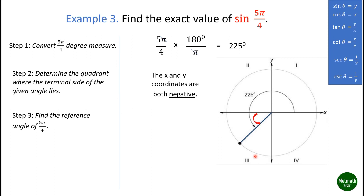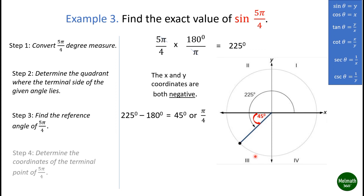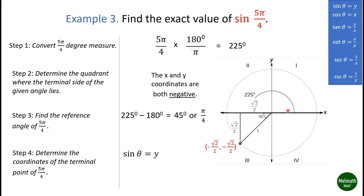Find the reference angle of 5π/4: 225° - 180° = 45°, or pi over four. Determine the coordinates of the terminal point of 5π/4. Recall that the point at π/4 equals (√2/2, √2/2). Since 5π/4 is in quadrant three, the point at 5π/4 equals (-√2/2, -√2/2). Therefore sine(5π/4) = y = -√2/2.